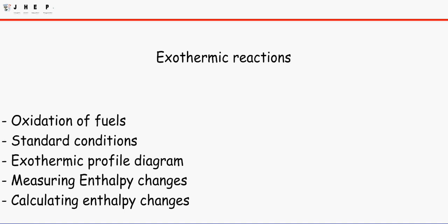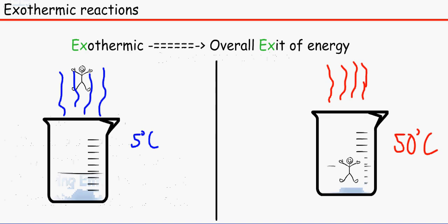Hello and welcome to J-Heb's lesson on exothermic reactions. This is going to be a long video, so look at the description if you want to skip some sections. The first thing we need to know is what an exothermic reaction is. Exothermic means an overall exit of energy — we are losing energy.